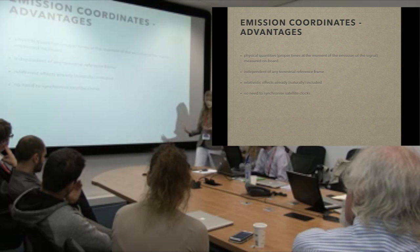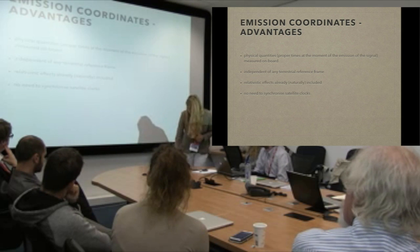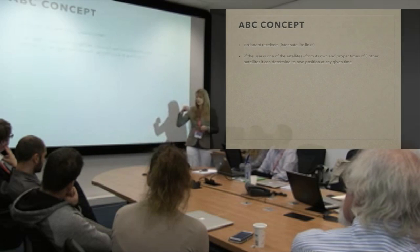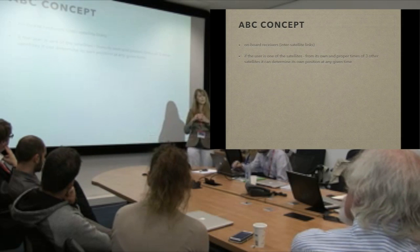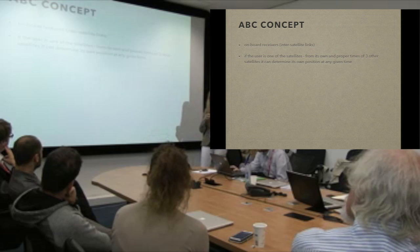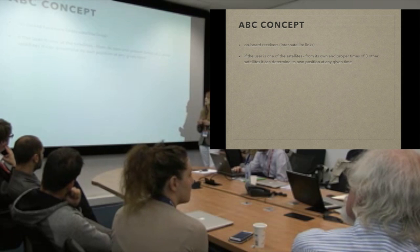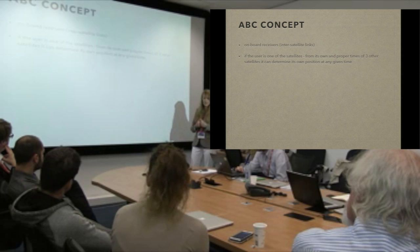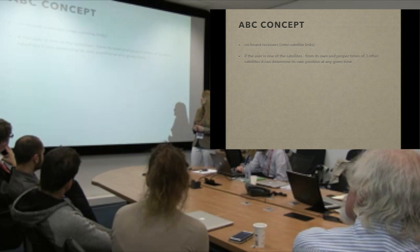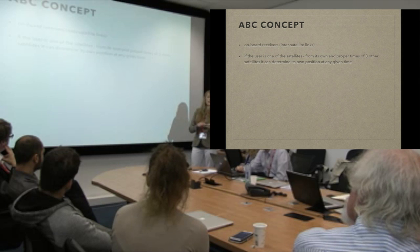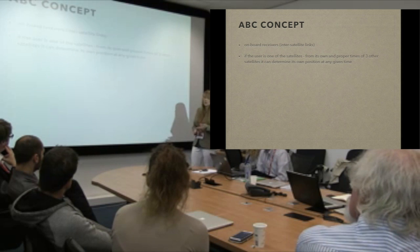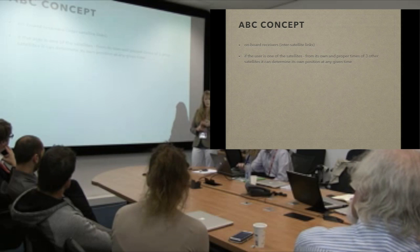All relativistic effects are already naturally included, and there is no need to synchronize satellite clocks — we just let them run at their own pace. Now we can imagine that if one satellite has a receiver on board, it not only broadcasts its own time but also receives proper times from other satellites. So if it has its own time and receives proper times from three other satellites, it can determine its own position — it's like a user.